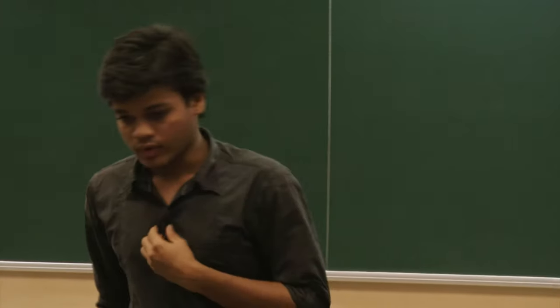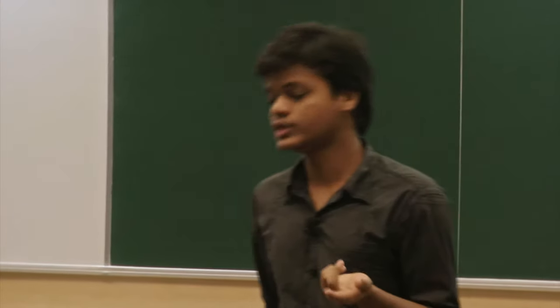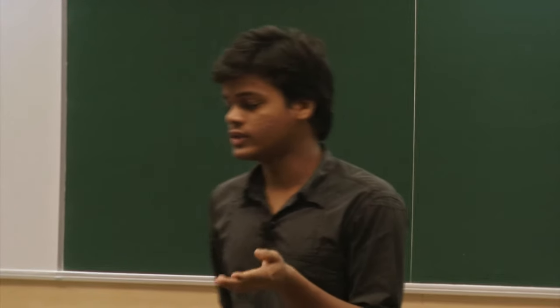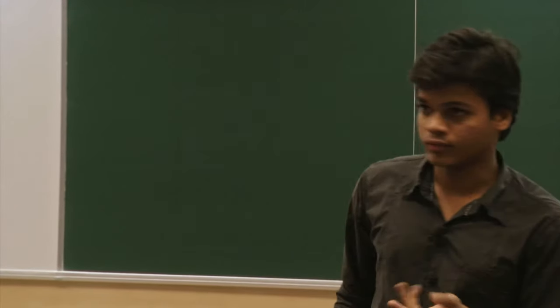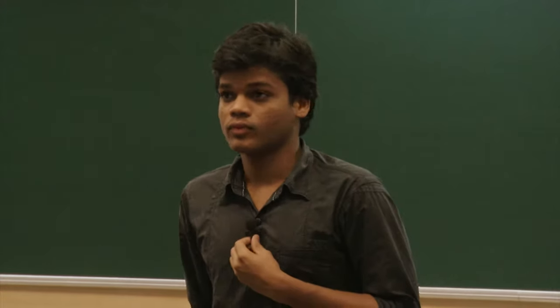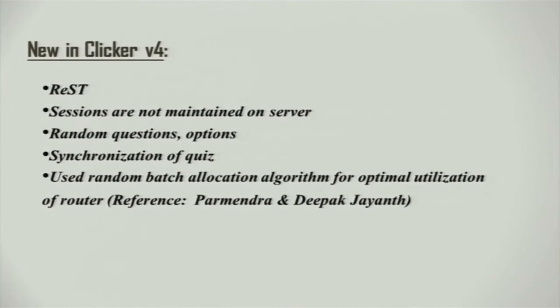We analyzed that in version 3, the file size was very large — nearly more than 3 MB — making download times very long. So what is new in our version, Clicker version 4?